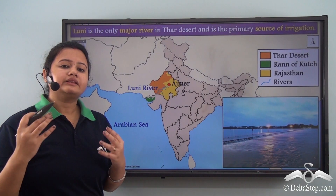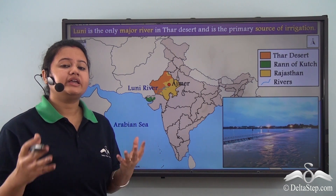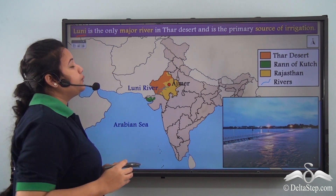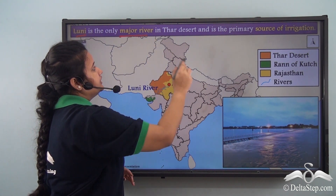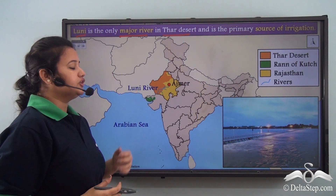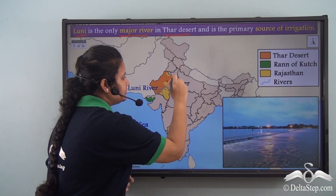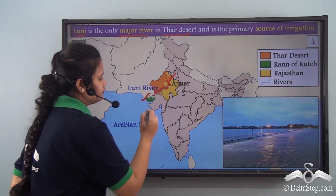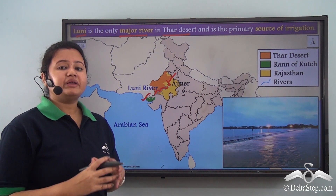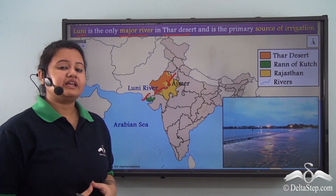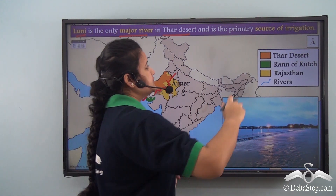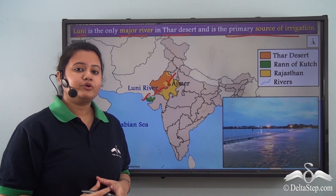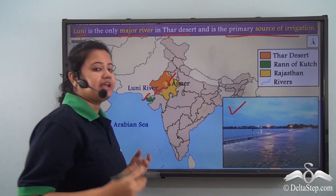Although Thar Desert is an extremely dry arid region, it is blessed with the Luni River, which is the only major river in Thar Desert. This river originates in the Ajmer district of Rajasthan, then flows southwards and drains into the Rann of Kutch region. Luni River, being the only major river, is also the primary source of irrigation, making cultivation of crops possible to some extent.